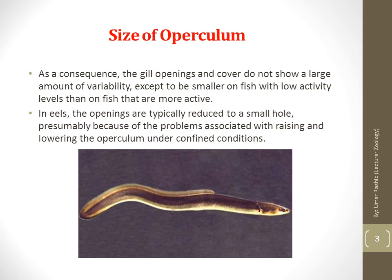The operculum size varies in different groups of fishes. Fish that have lower activity levels or are smaller in size have a reduced operculum size — the gill coverings or gill openings are all of a smaller size. For example, eels have typical openings which are reduced to a small hole.